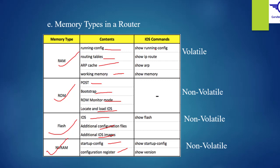The commands to display each memory type: for RAM, you can use show running-config, show ip route, show arp, and show memory. For ROM, you can use show version. For Flash, you can use show flash. And for NVRAM — non-volatile RAM — you can use show startup-config.